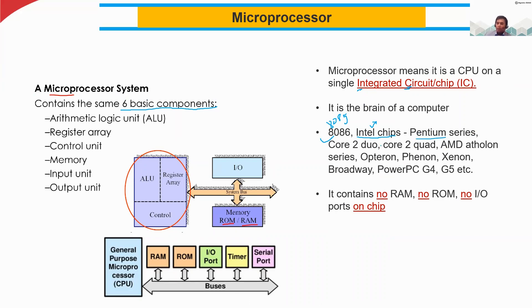Nowadays we have dual core, quad core, and so on. There are several companies — AMD is another company developing microprocessors, along with other companies. So there are different versions and different types of microprocessors.